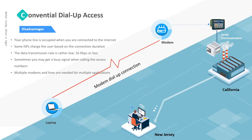Obviously there came a lot of disadvantages and limitations. Your phone line is occupied when you're connected to the internet. Sometimes you may get a busy signal when calling the access numbers. Only one application can be used at a time — you are not able to have multiple applications running over the same line. The data transmission rate is rather low, at 56 Kbps or even less, making it hard to download larger data. But this is still much better than sending an engineer to the site.